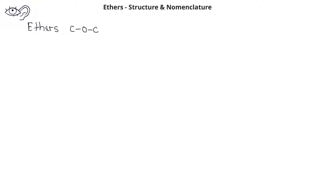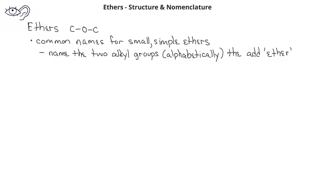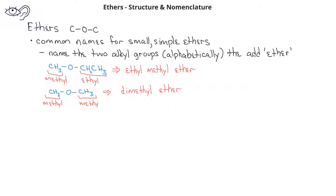Ethers are a type of organic functional group that has an oxygen bonded to two separate carbon atoms. When we name ethers, we can use two different systems. The first, or common names for ethers, involves naming the two alkyl groups on either side of the oxygen and then adding the word ether. The two different alkyl groups are named alphabetically. In this case, we would name the first molecule ethyl methyl ether. The second molecule we could name dimethyl ether.